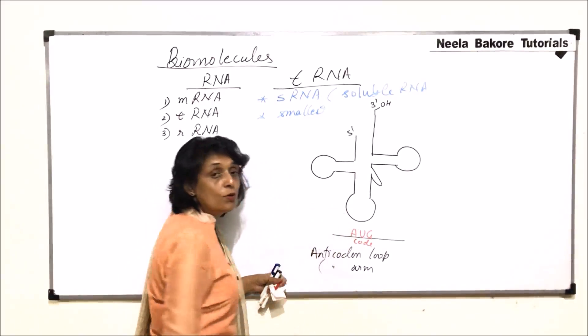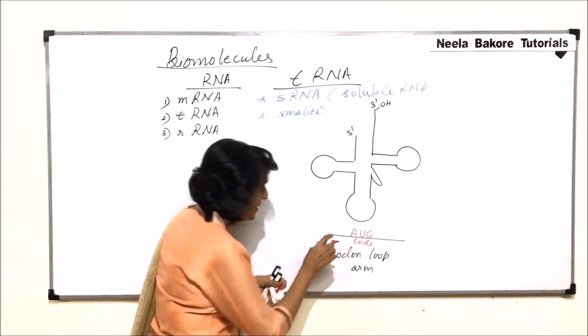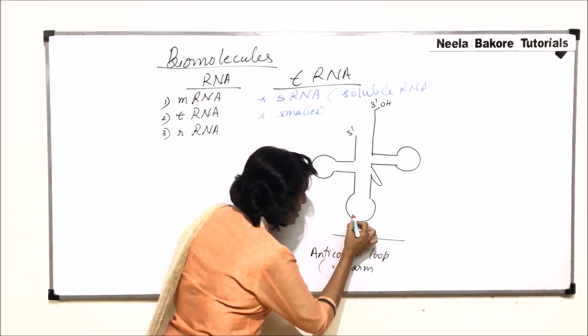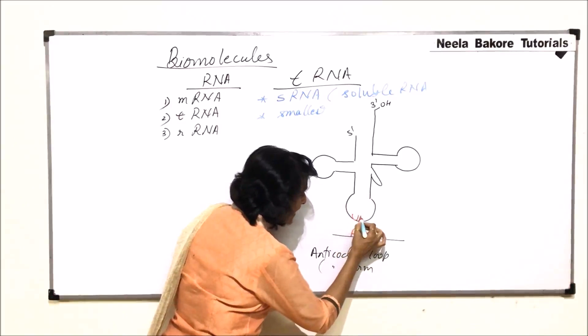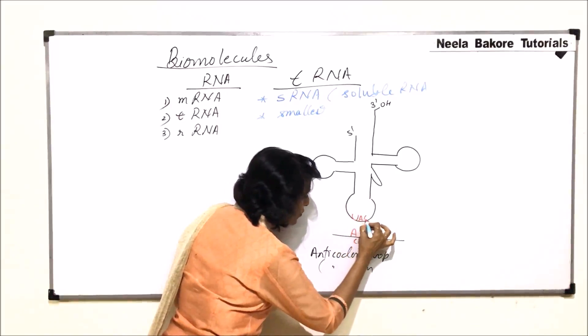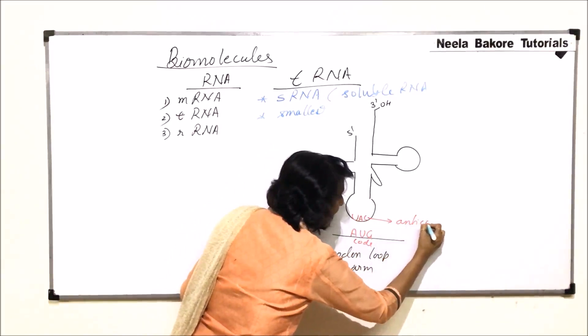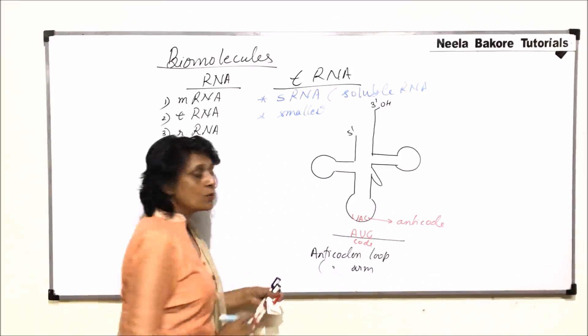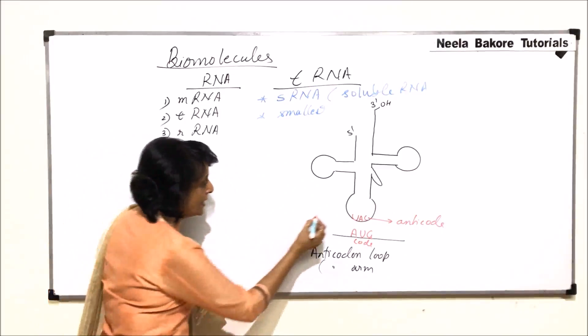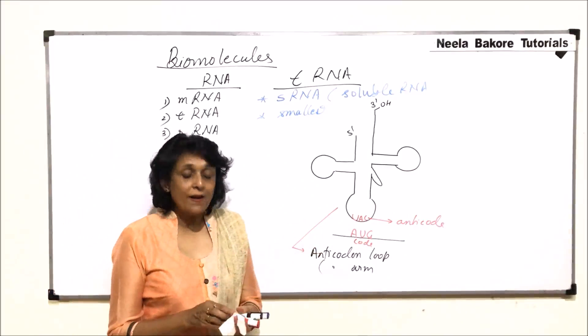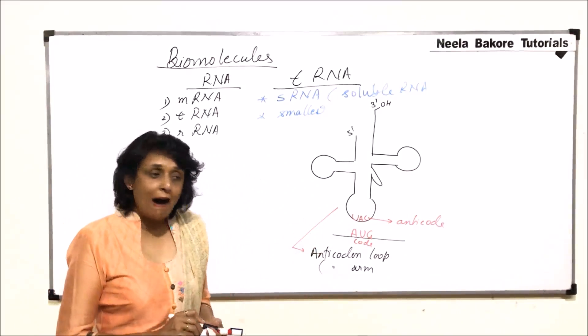A is going to pair with U. This is also RNA so there is no T. So it's going to be U here. U is going to pair with A and G is going to pair with C. So this is an anticode. And that is why this loop is termed as anticodon loop or anticodon arm.